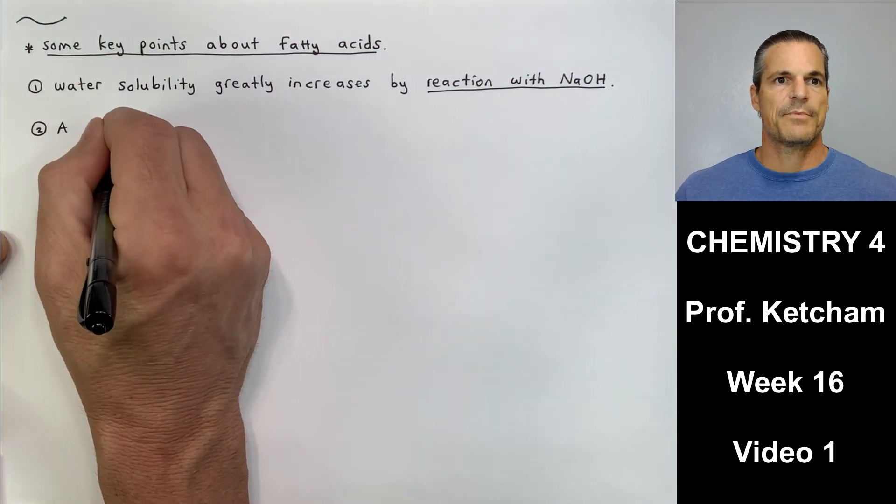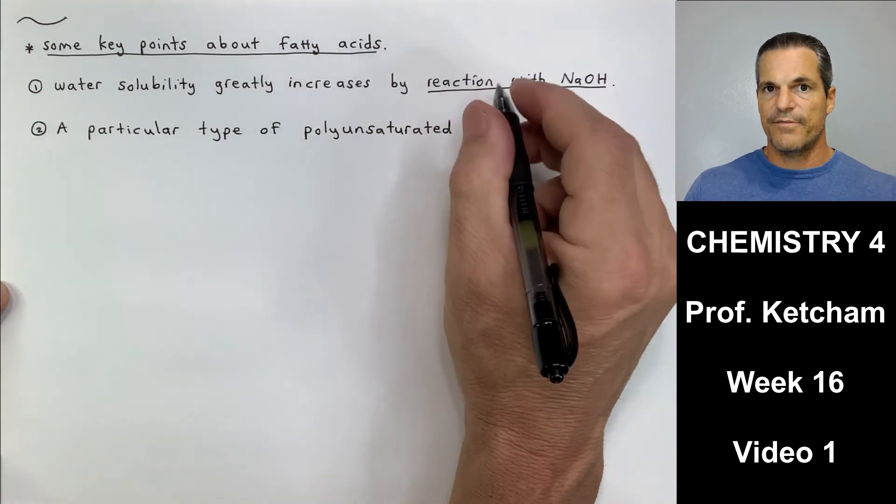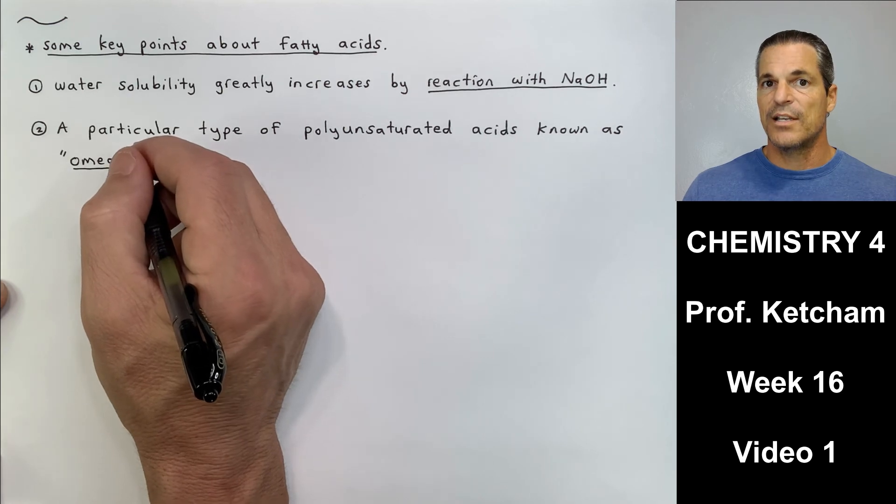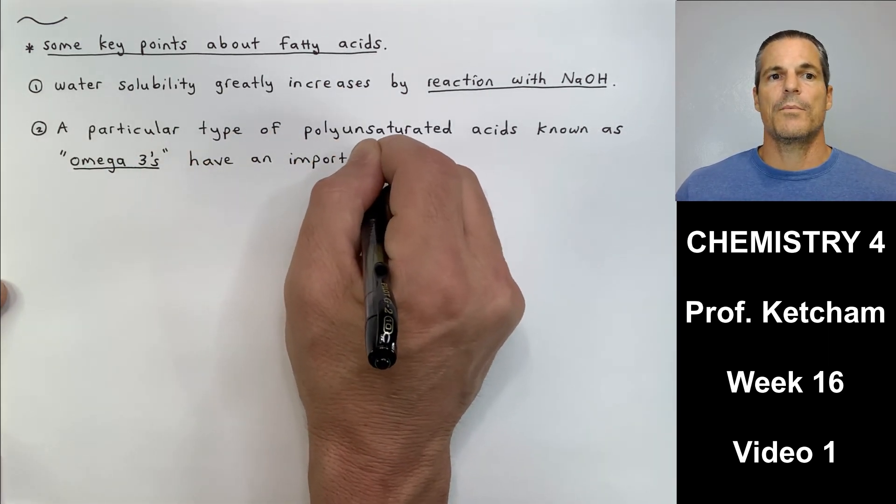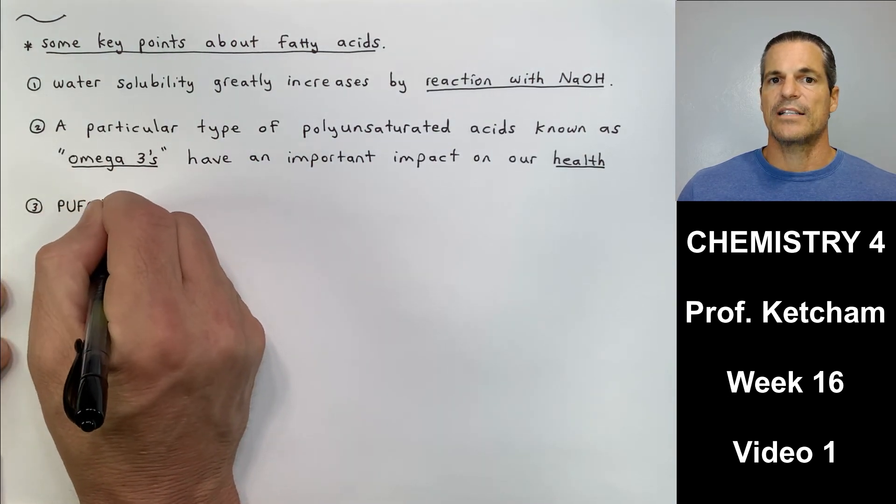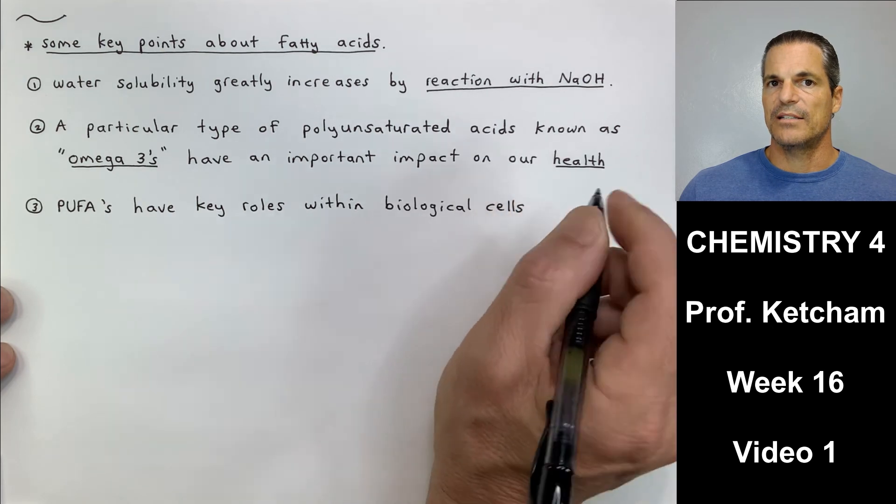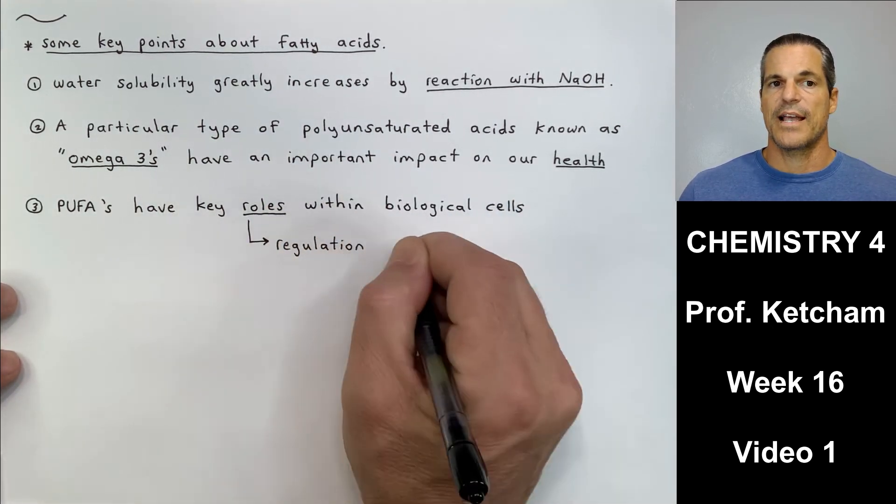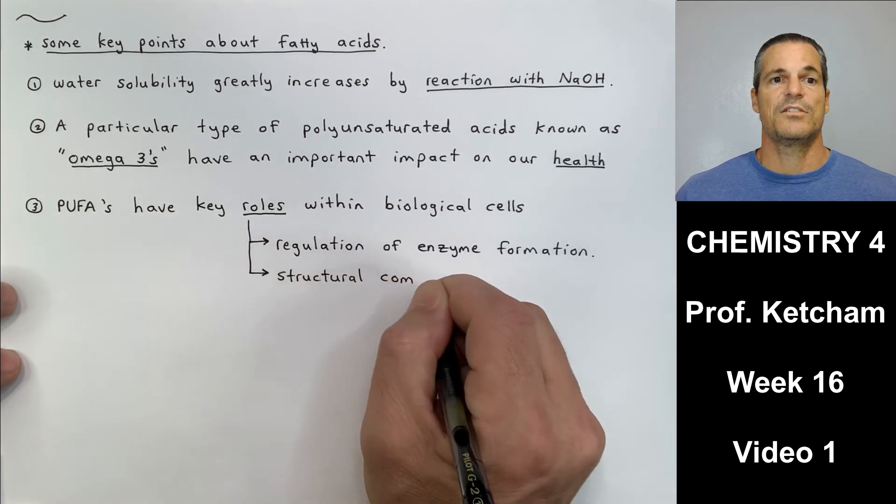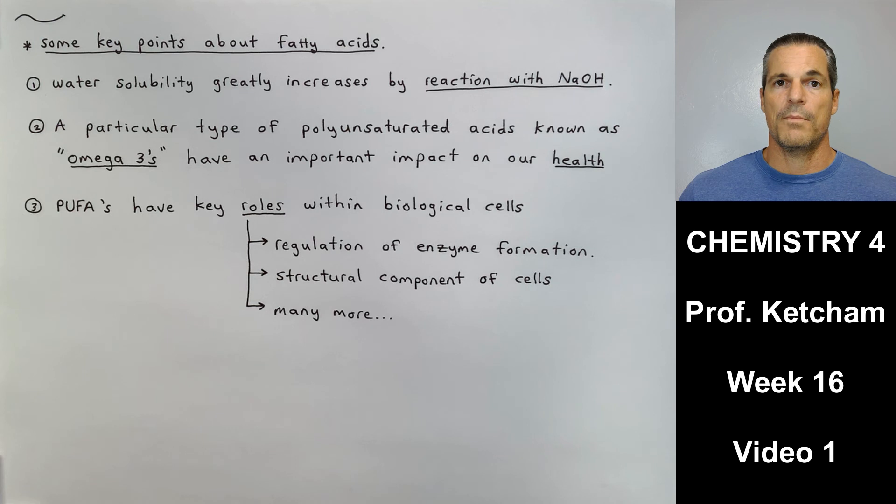Lastly, for video number one from chapter 15, some key points about fatty acids. This video is going to give us everything we need to know about fatty acids. And then we're going to apply this fatty acid information to video number two, which is coming up that talks about waxes, primarily wax esters, and then triglycerides. So some key points. Number one, water solubility greatly increases by reaction with NaOH. We learned when studying carboxylic acids that carboxylic acids will react with NaOH and make the carboxylate salt. And a salt or a carboxylate is always more water soluble than its corresponding carboxylic acid. Number two, a particular type of polyunsaturated acid known as omega-3s have a very important impact on our health. You've probably seen a lot of these in Rite Aid. They're selling them in bottles, almost like vitamins, but omega-3.